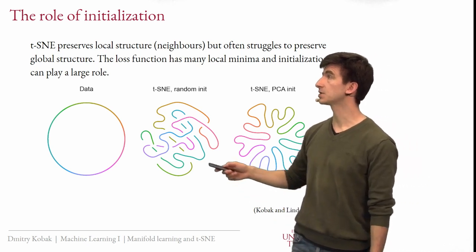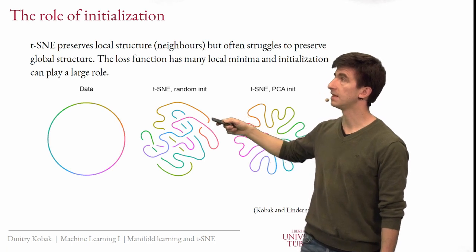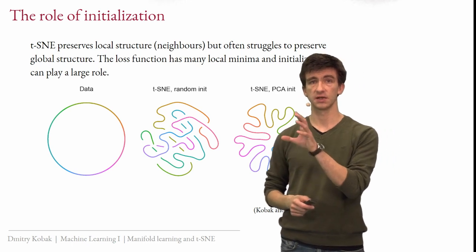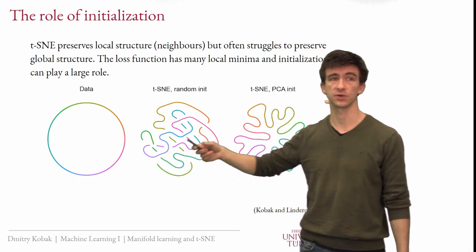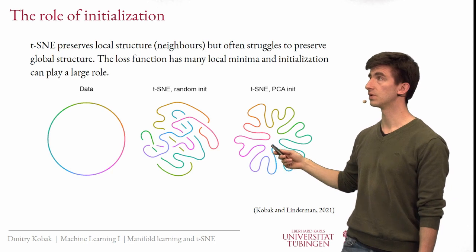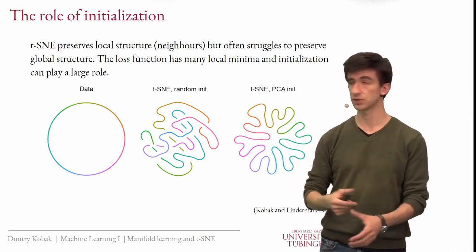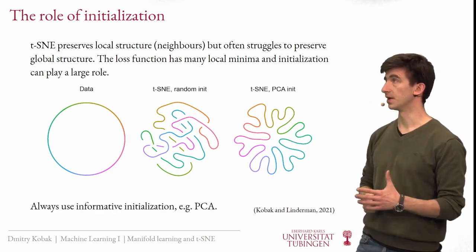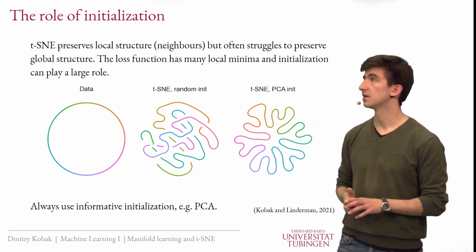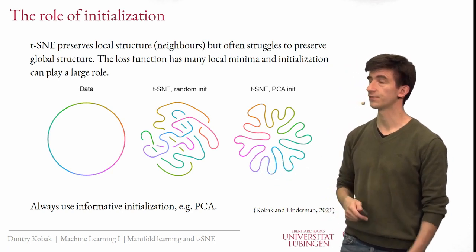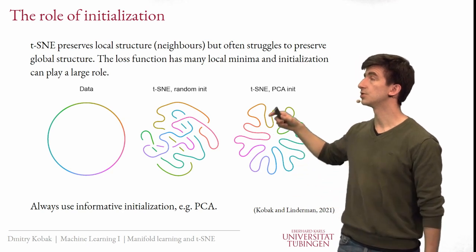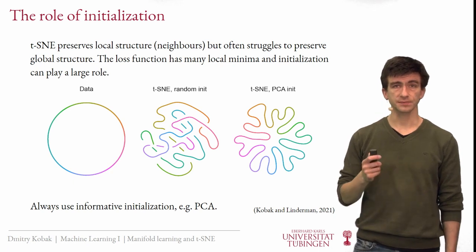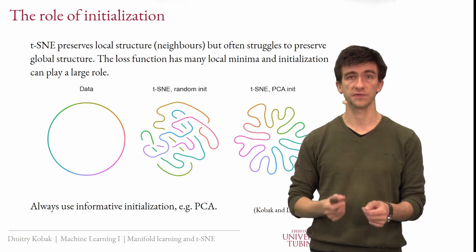If you use the first two principal components — PCA — to initialize T-SNE, in this case PCA just coincides with the entire data, then it converges to something that preserves the circle structure. These are two different local minima: one is a bad local minimum, the other is a better local minimum. The take-home message is that it absolutely makes sense to use informative initialization, for example PCA, to initialize the embedding. Then you will converge to a better local minimum. This is true not only for T-SNE but for any kind of neighbor embedding algorithm.